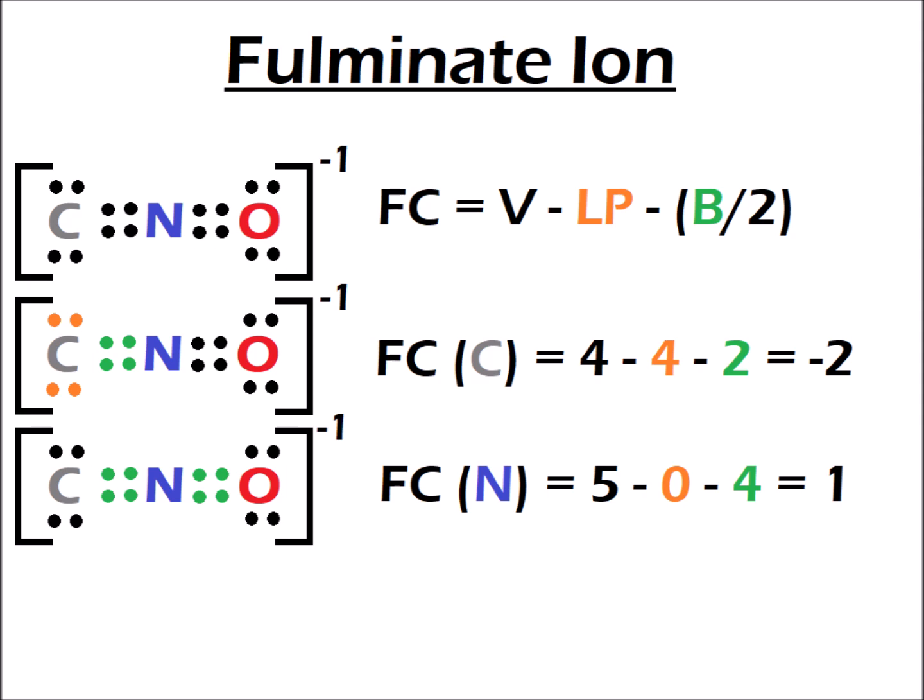Next, we look at the formal charge on nitrogen in the fulminate ion, shown in blue. Nitrogen has five valence electrons. It has no lone pair electrons, and there are eight bonding electrons — divided by two gives four. So the formal charge on nitrogen is plus one, a positive formal charge on a generally electronegative element. This is another sign of potential instability, joining the minus two on the not very electronegative carbon.